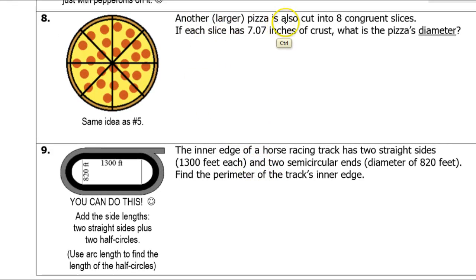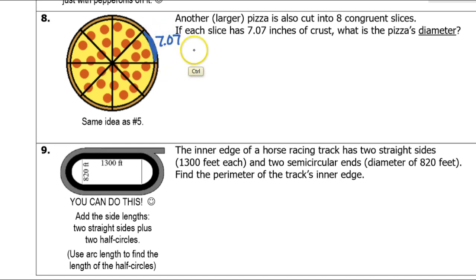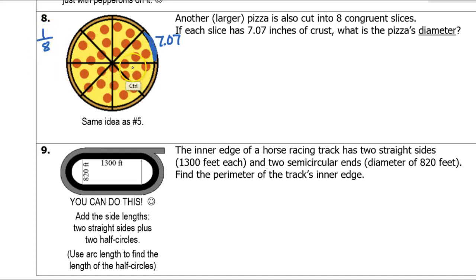Another larger pizza is also cut into eight congruent slices. If each slice has a 7.07-inch crust, they are telling us that the arc length is 7.07. We already know the fraction is 1/8 — each slice is 1/8 of the pizza. If for some reason you're not comfortable with that, you would have to calculate that this is 45 degrees, and your fraction would be 45 out of 360, which is the same thing.